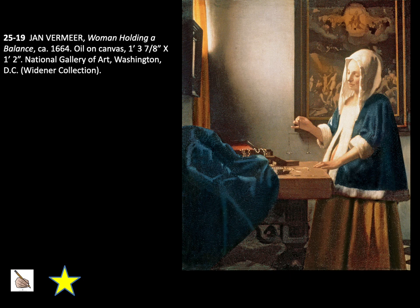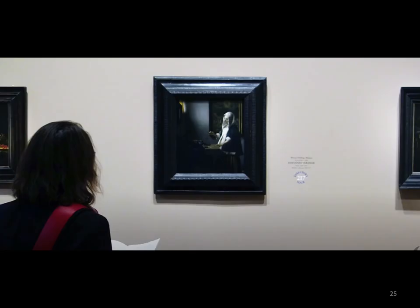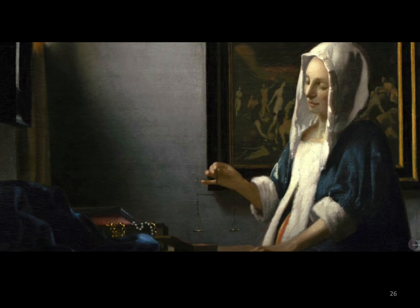Our next artist is Vermeer with the painting Woman Holding a Balance. This woman, who could have been Vermeer's wife serving as the model, is part of the merchant class in Holland. The cap on her head was made of linen, commonly worn by women when they were at home. In her right hand is a balance, and the box in front of her has pearls and coins — a sign of her material wealth.